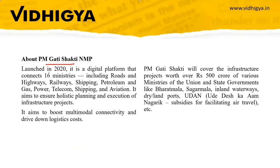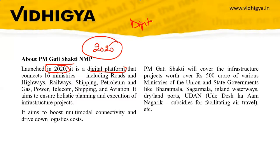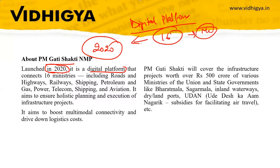PM Gati Shakti National Master Plan was launched in 2021. It is a digital platform that connects 16 ministries. Some of these ministries are Roads and Highways, Railways, Shipping, Petroleum and Gas, Power, Telecom, and Aviation. It aims to ensure holistic planning and execution.